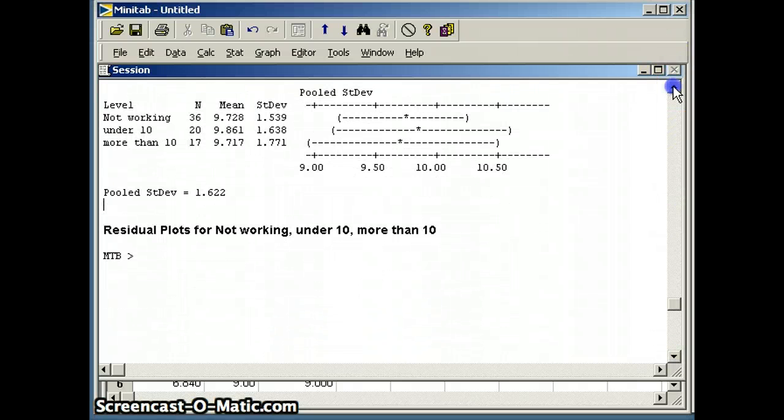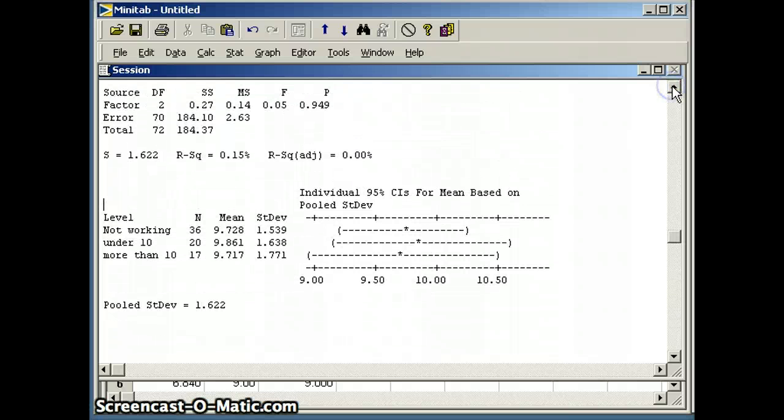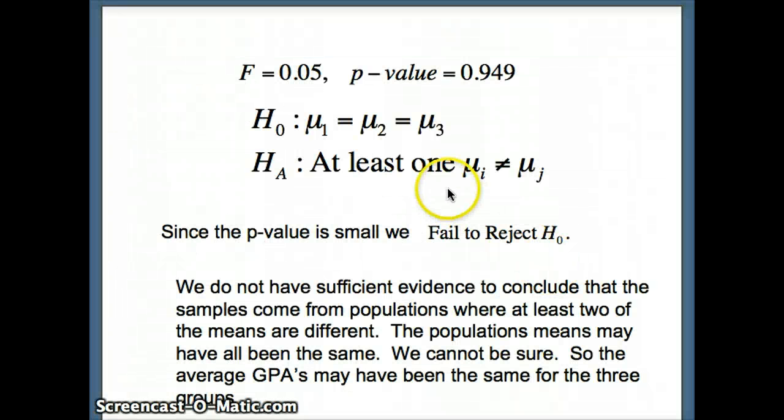Okay, so we're going to go ahead and take our relevant information, namely our F statistic and our P value and state our conclusion. So again, our relevant information, the F is 0.05. The P value is 0.949. Our H naught is that mu1 equals mu2 equals mu3, which means that the average GPA for the non-workers was the same as the average GPA for the under 10 hours a week workers was the same as the average GPA for the over 10 hours a week. H a is that at least one pair would have been different.